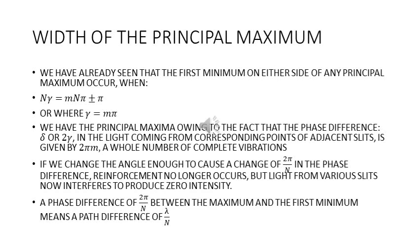This is owing to the fact that the phase difference δ or 2γ in the light coming from corresponding points of adjacent slits is given by 2πm — that is, a whole number of complete vibrations. If we change the angle enough to cause a change of 2π/N in the phase difference, then reinforcement will no longer occur, but light from various slits now interferes to produce a zero intensity.